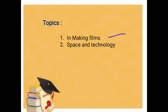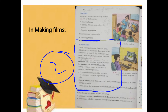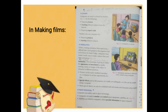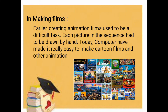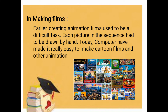Today we will read about use of computer in making films and in space technology. This topic is on page number 2 of your book. Please take out your books and copies and pencils for underlining the important points. I have written the book's points here. We will read them and whichever points are important, you will need to underline them.